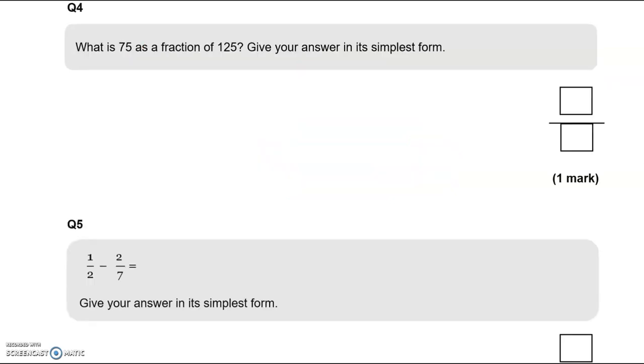Question number 4: What is 75 as a fraction of 125? Give your answer in the simplest form. So 75 out of 125. I can see that both 75 and 125 are multiples of 25. So 3 lots of 25 fit into 75, and 5 lots of 25 fit into 125. If you didn't spot that, maybe you spotted they're multiples of 5 because they're both ending in 5s. The end result would still be 3/5.